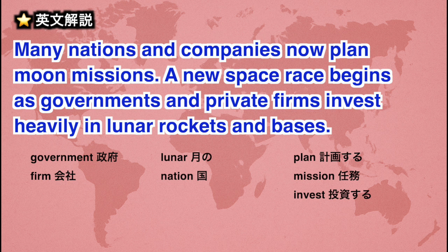従属節を見てみると、Governments and private firms invest heavily in lunar rockets and basesとあります。政府や民間企業が月向けのロケットや基地に多額の投資をしているので競争が始まる、ということです。この文も結局は2つのシンプルな文がASによってつながっているだけ。従属節も主語がGovernments and private firms、動詞がinvestというシンプルな構造です。